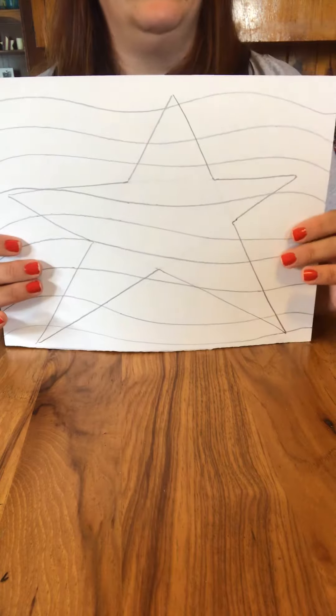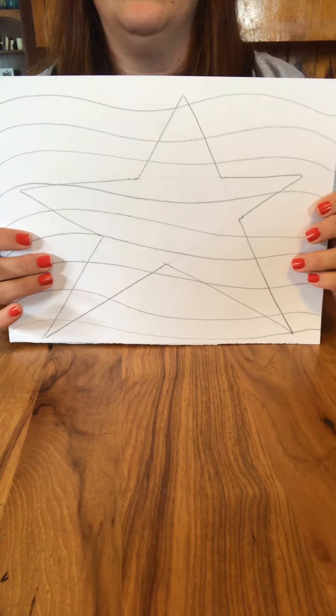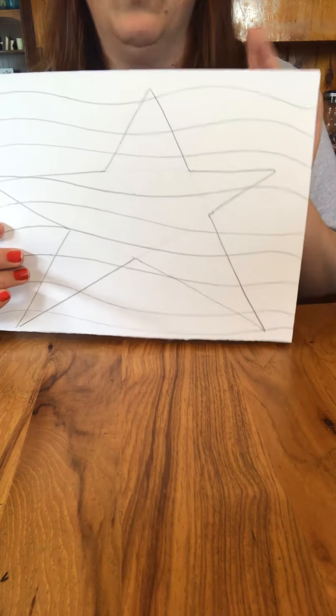Now to turn this into an optical illusion you have to color it a certain way. So you're going to start at the top and you can choose a color. You want just one or two colors.